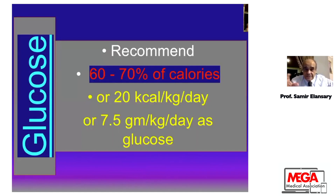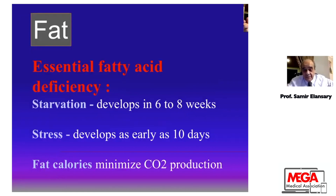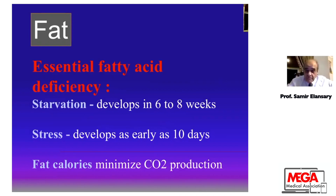The recommended percentage for carbohydrates is 60–70% of calories, or 20 kcal per kg per day, or 7.5 g per kg per day as glucose — do not exceed this amount from carbohydrate. For fat: essential fatty acid deficiency may occur — give fat to avoid it. In starvation, essential fatty acid deficiency develops within six to eight weeks; in stress, as early as 10 days. Fat calories minimize CO₂ production, and sometimes we increase the fat percentage in such situations.